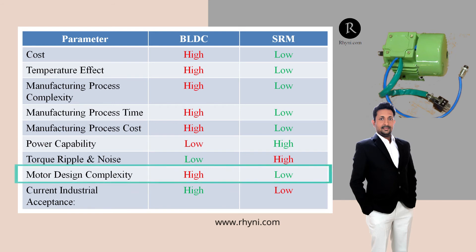Motor design: Motor design is the process of obtaining the physical dimensions of all parts of the motor for given power and performance before finalizing the manufacturing process. The design process of the BLDC is assumed to be more complex compared to that of the SRM. Designing a BLDC motor requires selecting the type and placement of the magnet from various options, whereas SRM design is simpler as flux is produced by the stator pole only with no secondary flux issues. Thus predicting the performance of the SRM is easier than that of BLDC.